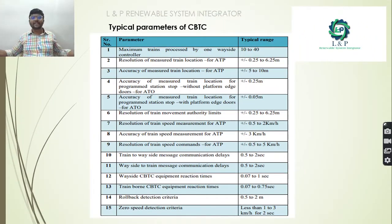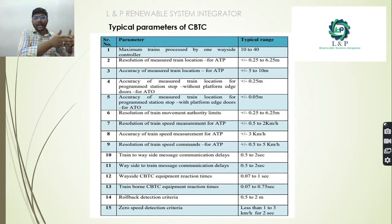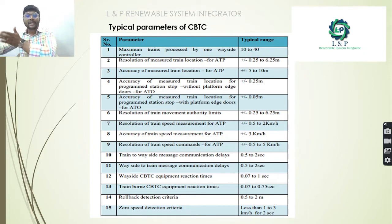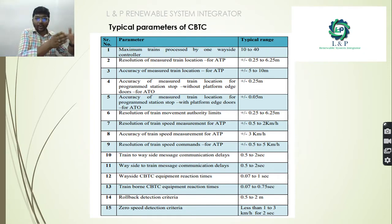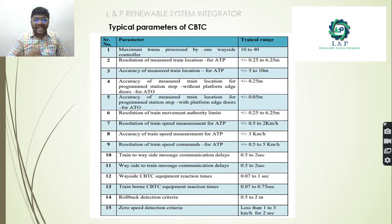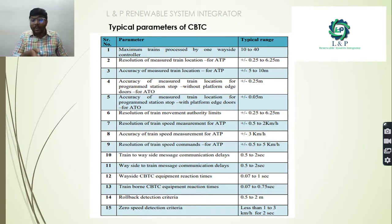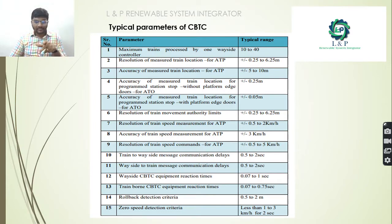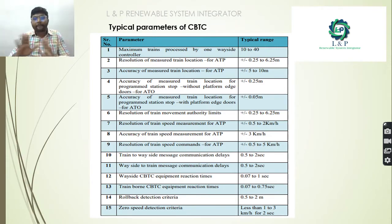The typical parameters for CBTC are: maximum speed range 10 to 40 km/h; train location resolution ±0.25 to 6.25 meters; wayside-to-train message communication delay 0.5 to 2 seconds; rollback detection criteria 0.5 to 2 meters; zero speed detection less than 1 or 3 km/h for 2 seconds; and accuracy of train speed measurement ±3 km/h. These are the parameters to comply with when creating a system for a particular metro station.